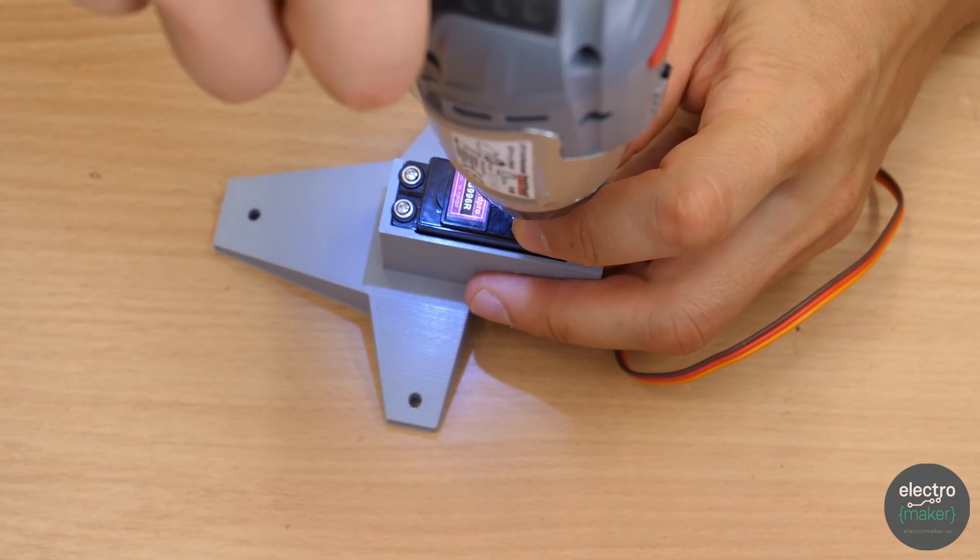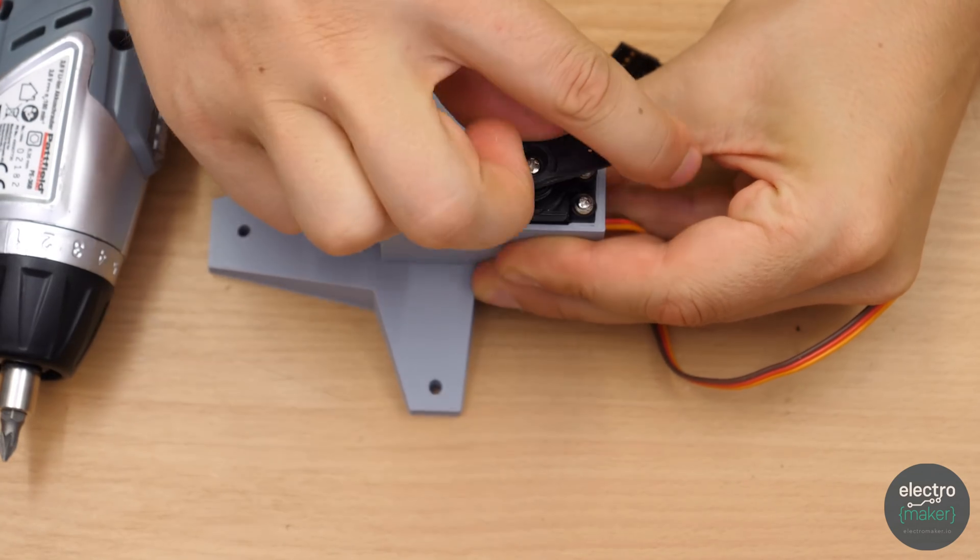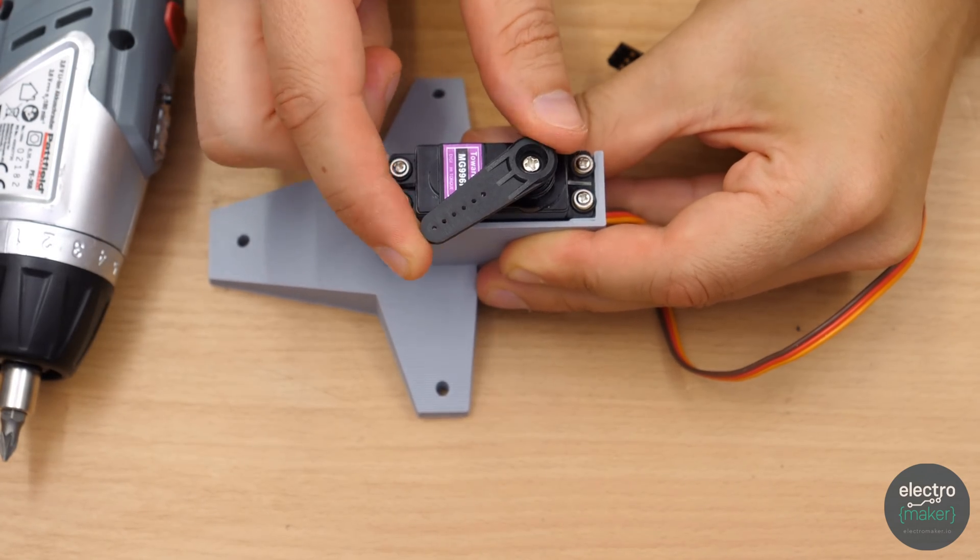The servo arms are not needed but can be used to center the servo position before attaching the next part to the axis. A bolt and a lock nut are used on the other side of the servo.